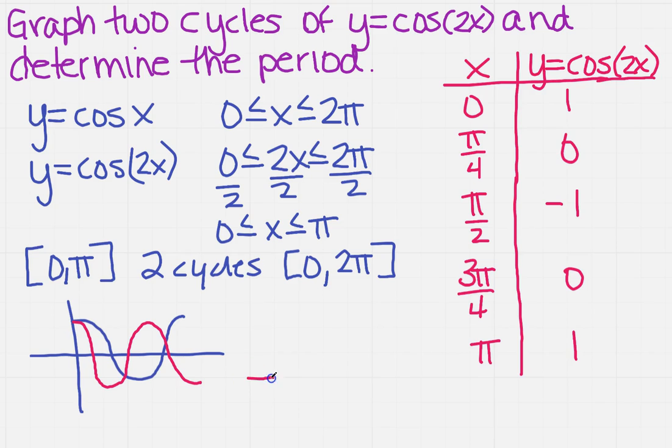So what does that do for us? Well, now we can actually graph it so that it's done correctly. So at 0, we're still going to be up here at 1. At π/4, I'm going to be at 0.